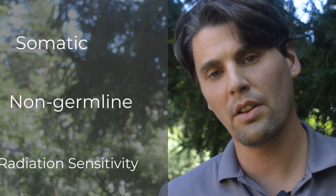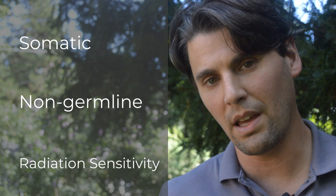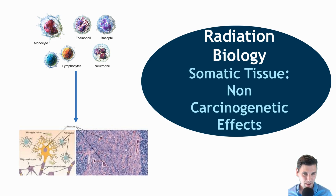Today we're going to be talking about somatic effects in somatic tissue. This is differentiated from tissue which will be passed on to the next generation — for instance, oocytes and sperm cells. Those germline effects are coming up here on HowRadiologyWorks. So if you're wondering what somatic cells are, or the relationship between lymphocytes and nerve tissue in terms of their sensitivity to radiation damage, this is a good video to check out.